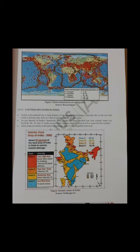Earthquake zones in India: the Indian subcontinent has a long history of devastating earthquakes, partially due to the fact that India is driving into Asia at a rate of approximately 47 mm per year. As per the Bureau of Indian Standards (BIS), India has been divided into four seismic zones — Zone 2, 3, 4, and 5 — unlike its previous versions which consisted of five zones. After some revisions, Zone 1 was altogether removed.